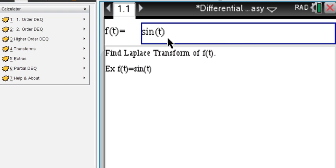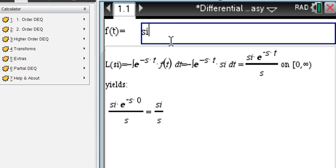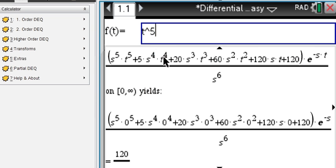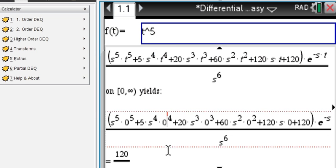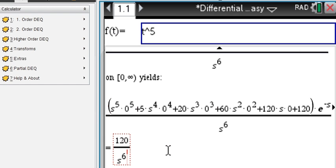Remember to see the steps for any function in the world, t to the 5, here it is to the 5, you end up with 120 over s to the 6, which of course can also be seen in the table of Laplace transforms.